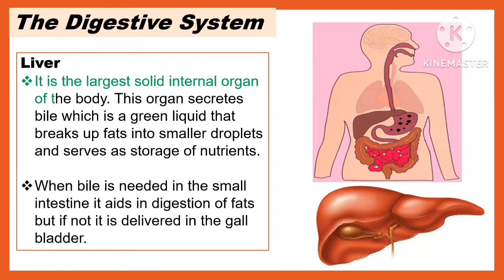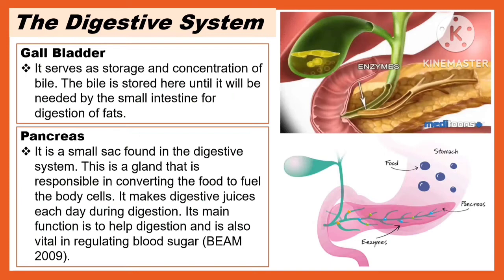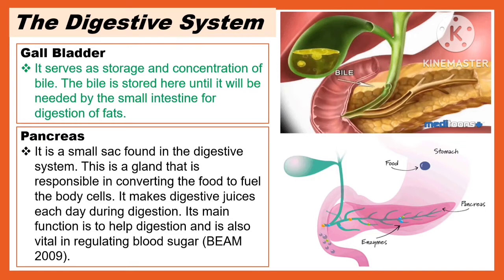Another part of the digestive system is the liver, the largest solid internal organ of the body. This organ secretes bile, a green liquid that breaks up fats into smaller droplets, and serves as storage of nutrients. When bile is needed in the small intestine, it aids in digestion of fats; if not, it is delivered to the gallbladder. The gallbladder serves as a storage and concentration of bile. The bile is stored here until it is needed by the small intestine for digestion of fats.